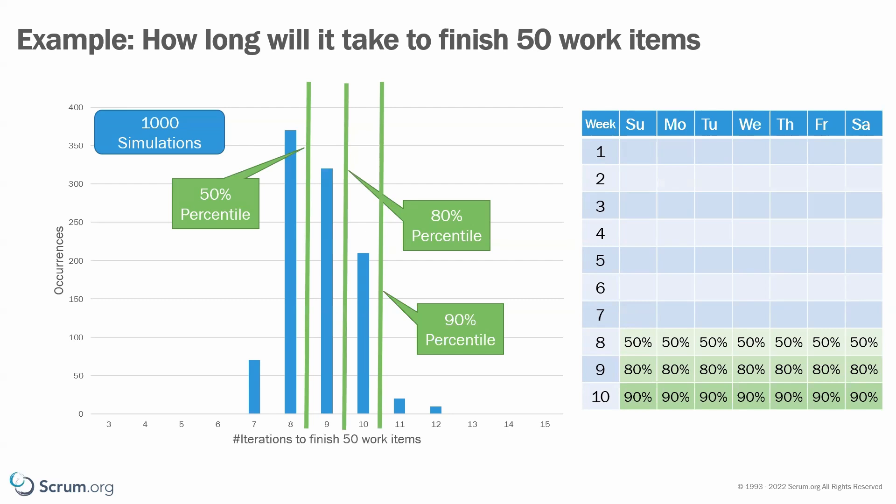This is because in this chart, the highest delivery performance is on the left, where you need less time to complete an amount of items. On the other chart, we had the number of items on the x-axis, so the higher delivery performance is on the right, where we complete more items in the same time period.